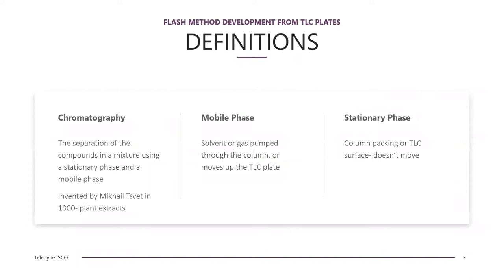Some basic definitions: chromatography is the separation of compounds in a mixture using a stationary phase and a mobile phase, invented by Michael Tsvet in 1900. The mobile phase is a solvent or gas pumped through the column, or the solvent that moves up the TLC plate under capillary conditions. The stationary phase is the column packing or TLC surface and does not move.